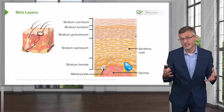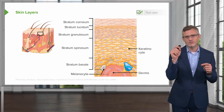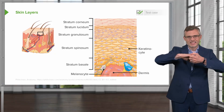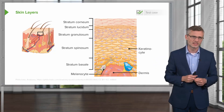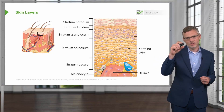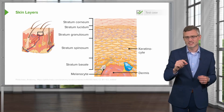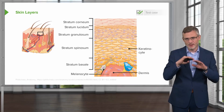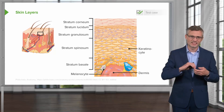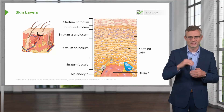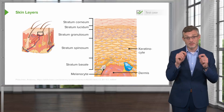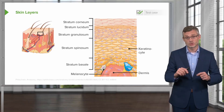All the keratinocytes are connected to one another by individual desmosomes — that's what basically provides a nice link between each keratinocyte. In contrast, the epidermis is connected to the dermis at the stratum basal via hemidesmosomes. These are basically links that connect right at the base of those stratum basal cells, connecting the basement membrane to the dermis.